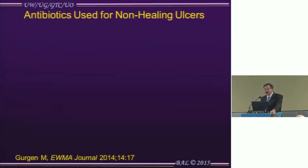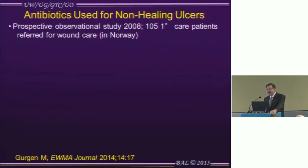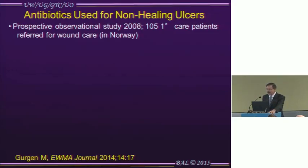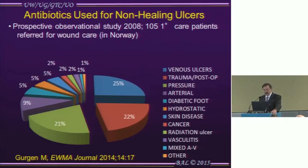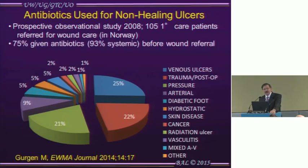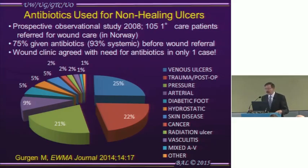Are antibiotics being used for non-healing ulcers? You bet they are. Just one of many studies — a recent one from Norway, even though they have a very low rate of antibiotic resistance in Scandinavian countries. This study done in 2008 looked at 105 patients referred by primary care providers to a wound specialist. 75% of these patients were given antibiotics, and in 93% of cases they were systemic — before being referred to the wound center. The wound center agreed with antibiotic use in only one case, 1% of the time. A lot of antibiotics being used unnecessarily.